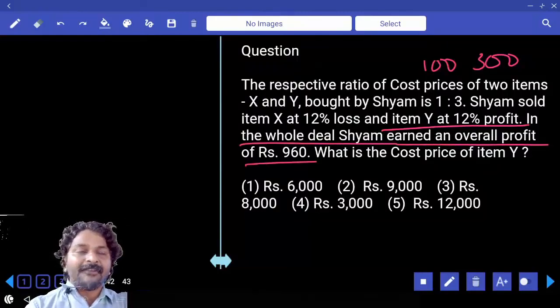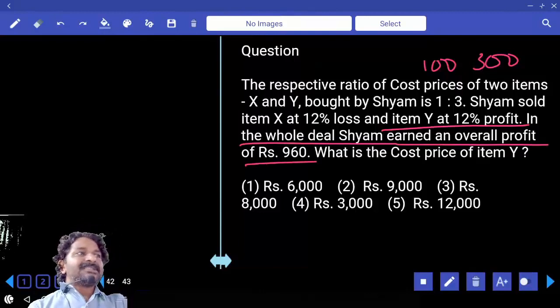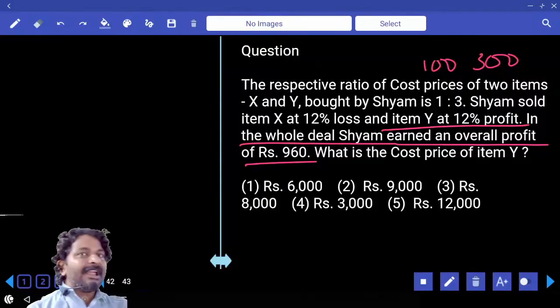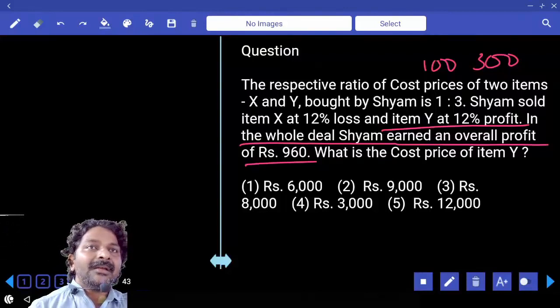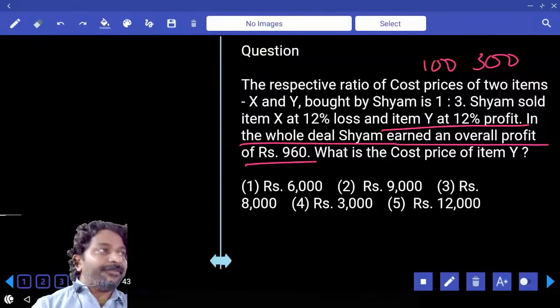In the whole deal Sham earned an overall profit of 960. On first item -12, second item +36, overall comes to 24.